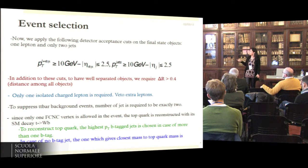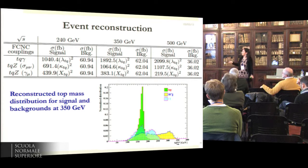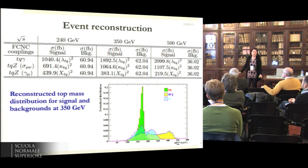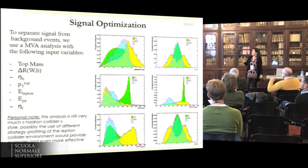The top quark is reconstructed, and this is a plot of the event reconstruction where you can see the signal in green is the peaking signal and then the two backgrounds—this is at 350 so you have the TT bar background that is somewhat irreducible and the W plus jets. However, this selection is very efficient.